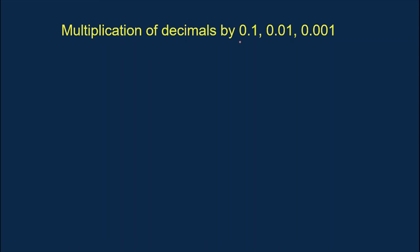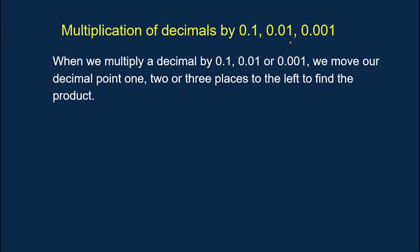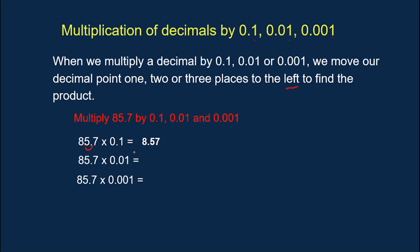Now we're going to multiply decimals by one-tenth, one-hundredth, and one-thousandth. When we multiply by one-tenth, one-hundredth, or one-thousandth, we move the decimal point to the left. Let's try an example: multiply 85.7 by one-tenth. Since one-tenth has one digit, we move the decimal one place to the left. This will be the new position of our decimal point, and our final answer is 8.57.